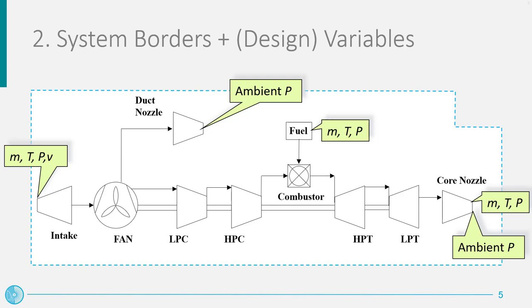The variables crossing the system borders are the air total temperature, pressure and mass flow rate at the engine inlet, which depend on the flight height and speed. The information on the air speed and the ambient pressure is also necessary to calculate the net thrust of the engine and to solve the expansion process in the nozzles. Similarly, other variables crossing the borders are the temperature, pressure and mass flow rate of the exhaust gases discharged by the engine, as well as the temperature, pressure and mass flow rate of the fuel injected into the combustion chamber. Notice that at this stage of the modeling activity, we don't have to define which are the inputs and outputs of the model, but just identify all the variables that are crossing the conceptual borders of the model.